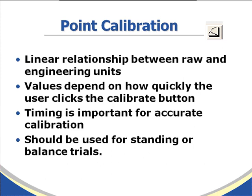Point calibration is the final calibration routine, and it is a linear relationship between raw units and engineering units. The values are going to depend on how quickly the user hits the calibration button. You want to hit the calibration button in the same manner that you're expecting to load the sensor. So if you're doing a quick maneuver, calibrate as quickly as possible. If you're doing a standing or balance study, have the subject stand on the sensor for at least 30 seconds and then hit the calibration button.